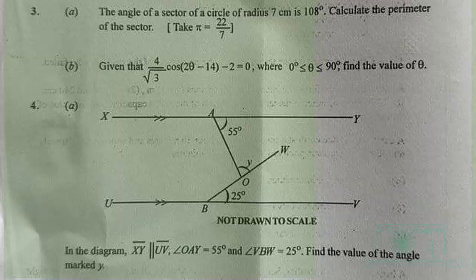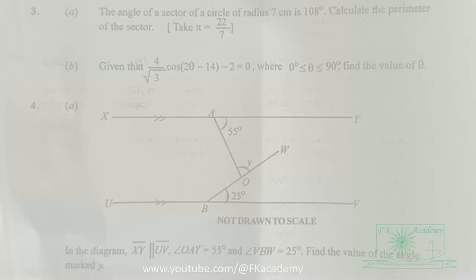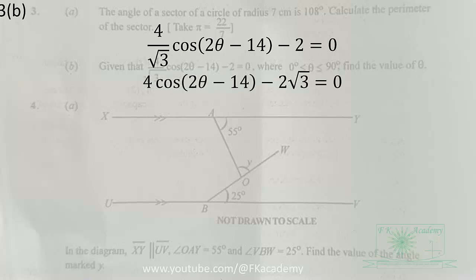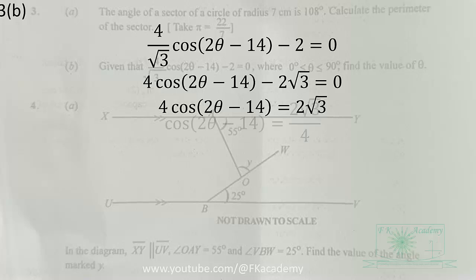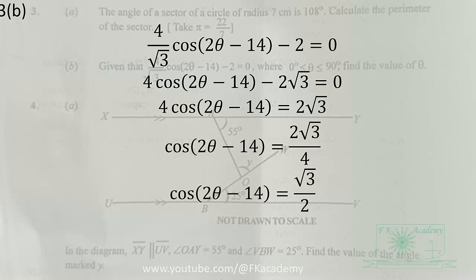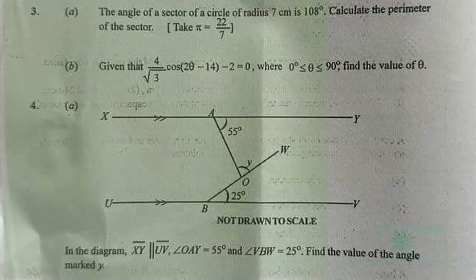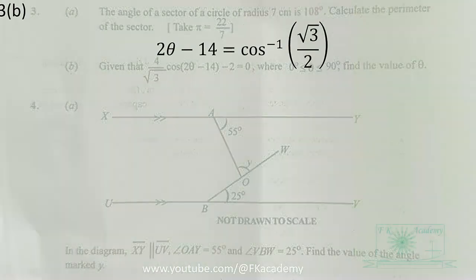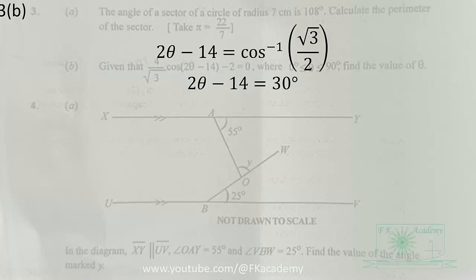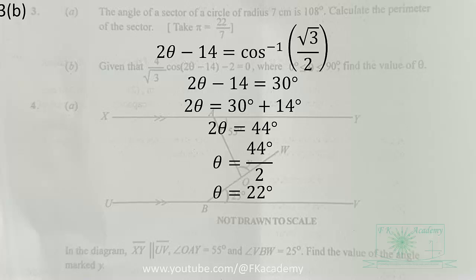For part (b), this is a trigonometric equation: 4cos(2θ − 14°) − 2 = 0. Multiplying through by the LCM, then adding 2 to both sides, we divide through by 4 and simplify to get cos(2θ − 14°) = 3/2. Taking the inverse cosine, cos⁻¹(3/2) = 30°. So 2θ − 14° = 30°, giving 2θ = 44°, and therefore θ = 22°.